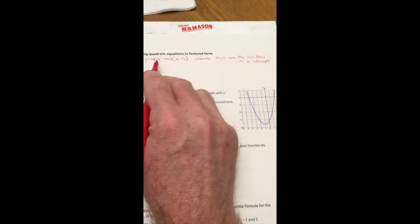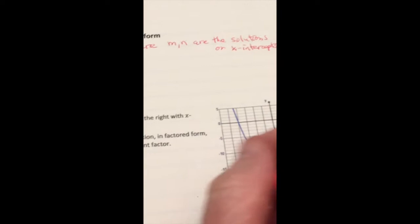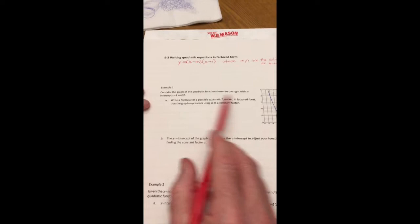The A in front is going to be some multiple. Sometimes that's a 1, it makes it easier, but sometimes there's another number. It changes the width of your parabola. So sometimes we're going to have to figure out what the A equals in some of these formulas and write the quadratic equation.